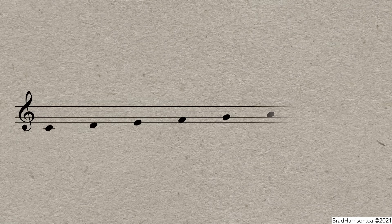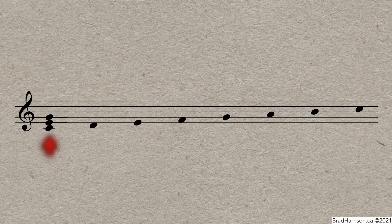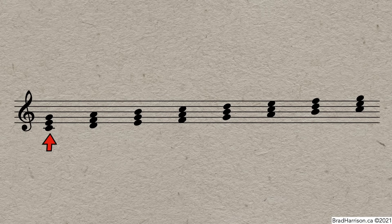We generally think of triads as being derived from scales, like C major. For instance, a major triad is the first, third, and fifth notes of the major scale, stacked on top of each other. And if we think of each note of the scale as the bottom or root note of a triad, and then add notes a third and fifth above them, then you'll have all the triads from the C major scale.